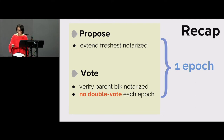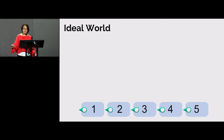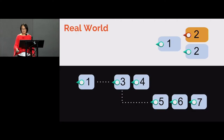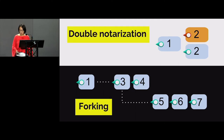Unfortunately this simple protocol is still somewhat flawed. In the ideal world it works fine — you see blocks one through five all notarized in a linear fashion, nothing skipped. In the real world, however, some nodes can be corrupt or crashed, so you'll see problematic scenarios. In this talk I'm going to focus on two particular problematic scenarios: double notarization and forking, and I will tell you how to overcome these problems.